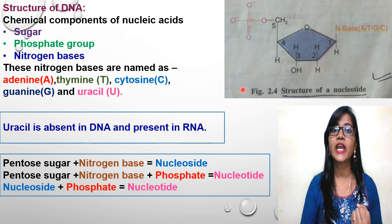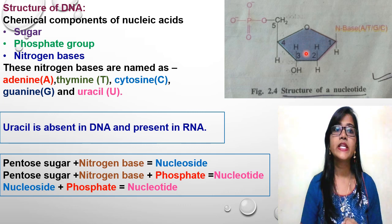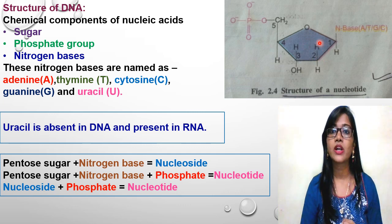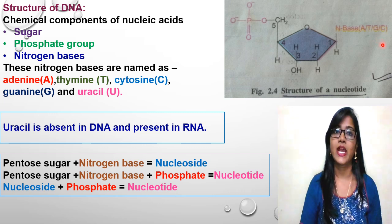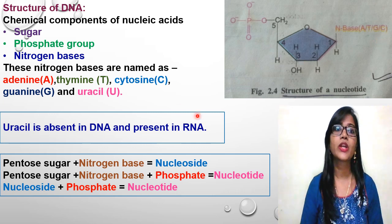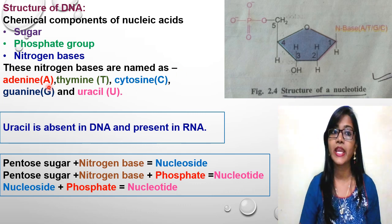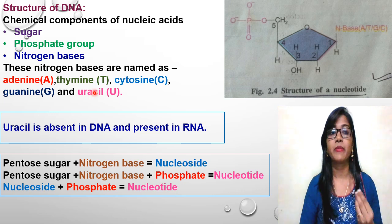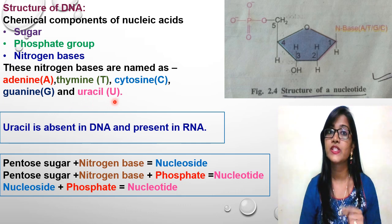This is the structure of a nucleotide: the phosphate group, the sugar, and the nitrogen base — adenine, thymine, guanine, cytosine, denoted as A, T, G, C respectively — and uracil, capital U. Uracil is absent in DNA and is present in RNA. Before going to that part, we must understand each chemical component in detail.